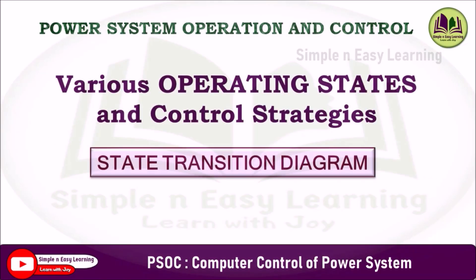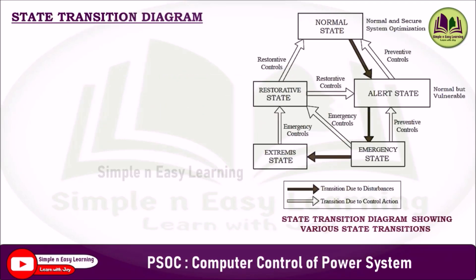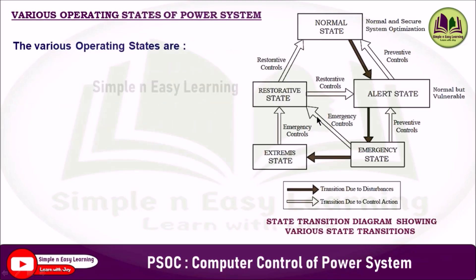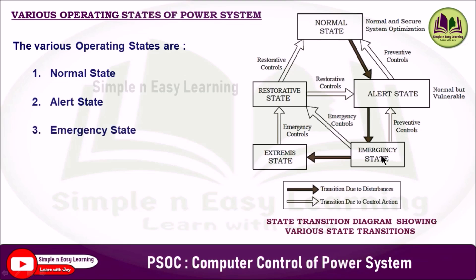In computer control of power systems, today we are going to discuss various operating states and control strategies using a state transition diagram. The state transition diagram illustrates the various operating states the power system can experience and the possible transitions between them due to changes in system conditions such as fault, overload, or emergency conditions, and the restoration process. The various operating states are: normal state, alert state, emergency state, extremist state, and restorative state.